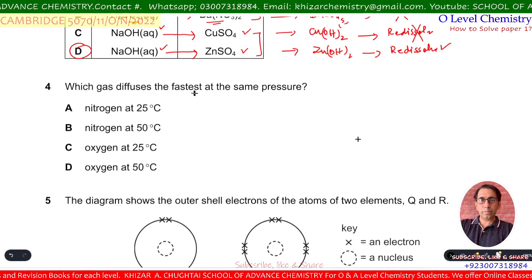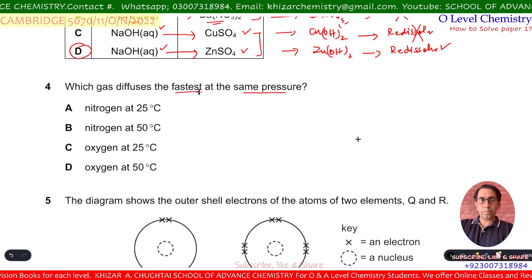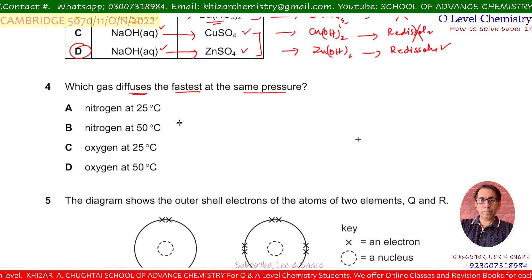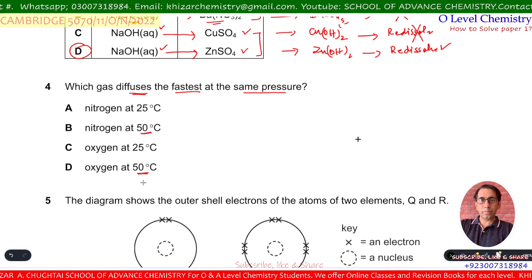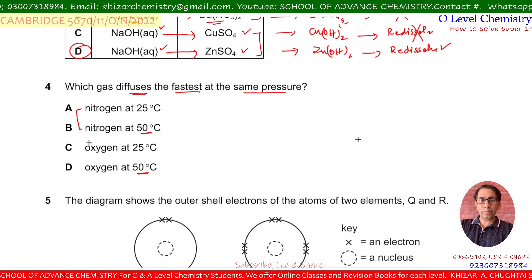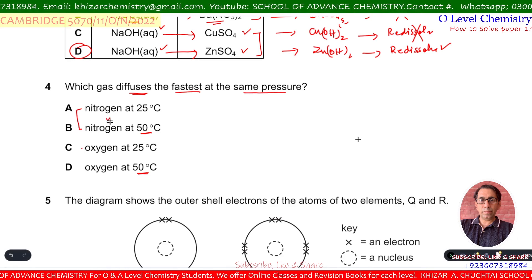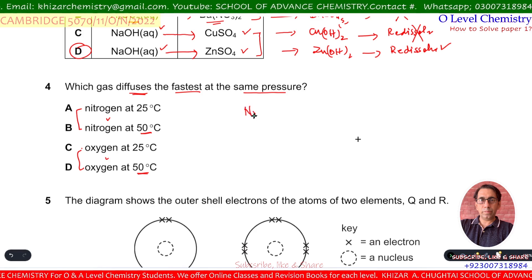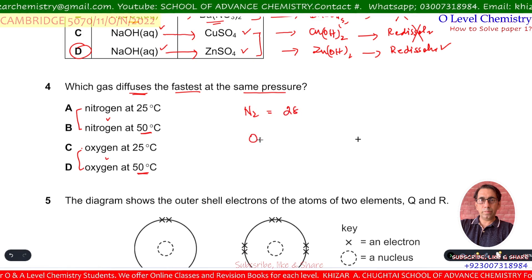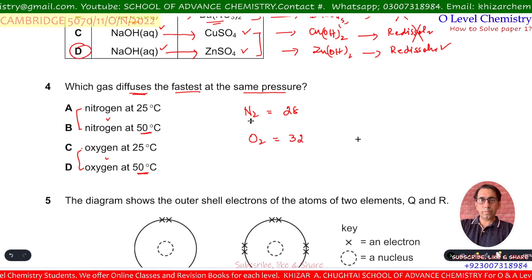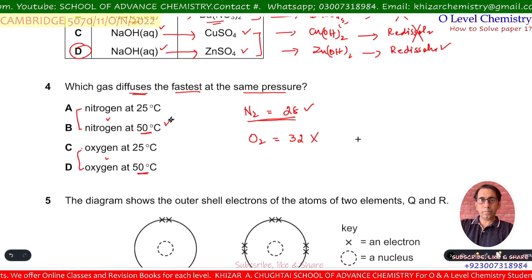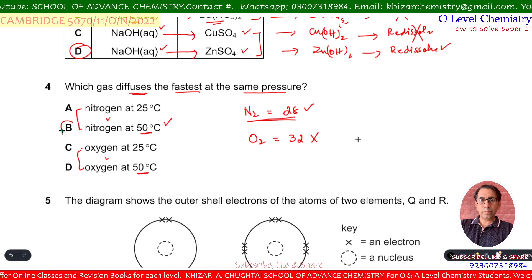Question number 4. Which gas diffuses fastest at the same pressure? The fastest rate of diffusion depends on higher temperature and smallest mass. The gases here are nitrogen (N₂, Mr = 28) and oxygen (O₂, Mr = 32). Nitrogen has the smaller Mr, so it gives the fastest rate of diffusion at higher temperature. B is the correct option.